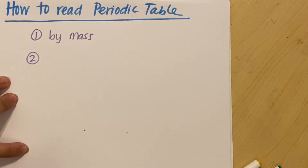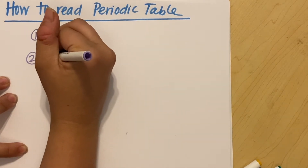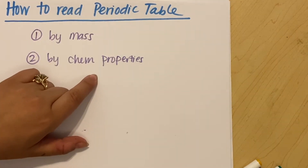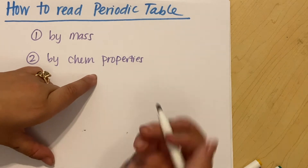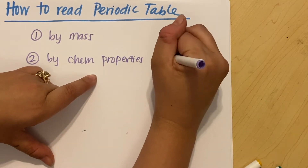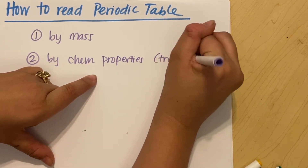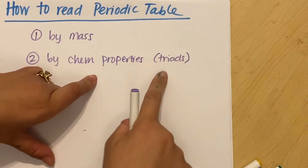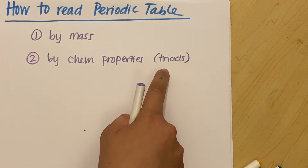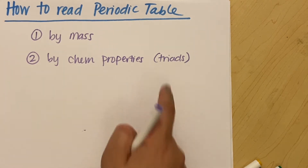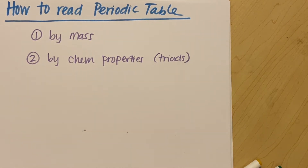The other way we had them was by their chemical properties. We had these groups of their chemical properties, and we used to call them triads.